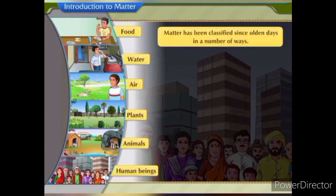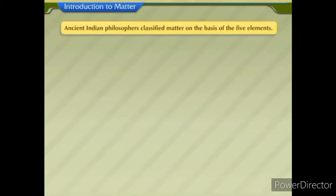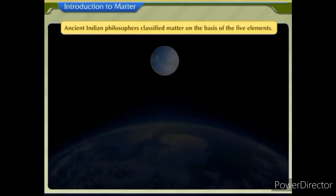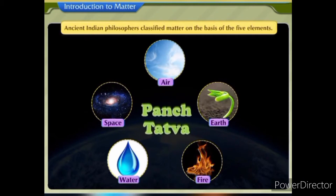Matter has been classified since olden days in a number of ways. Ancient Indian philosophers classified matter on the basis of the five elements: air, earth, fire, water and space. These elements were called the Pancha Tattva.